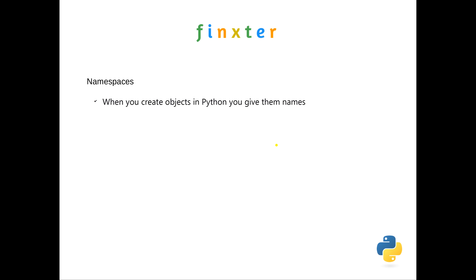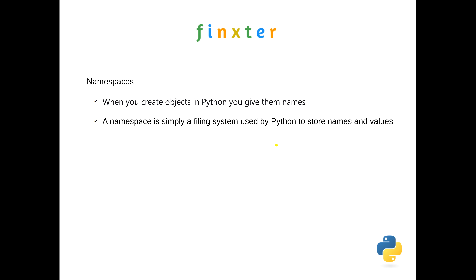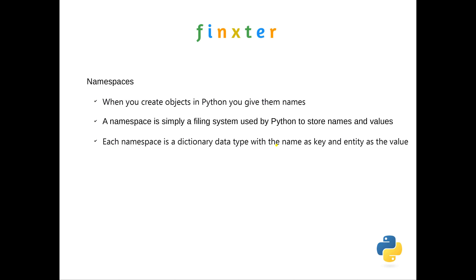So namespaces: when you create something in Python you give it a name, and it doesn't matter what it is — it could be a class, it could be a function, a variable — it has a name. A namespace is simply the place that that name is retained. It's a filing system used by Python to store names and whatever values may be attached to those. Python uses the dictionary data type, using the name as a key and the entity as the value. So if you assign x equals 10, x will be the key and 10 will be the value.